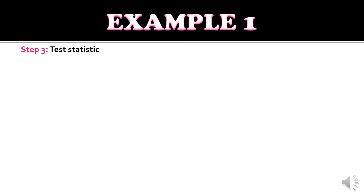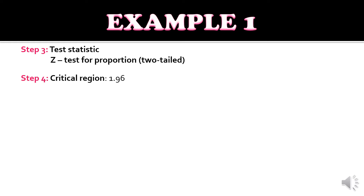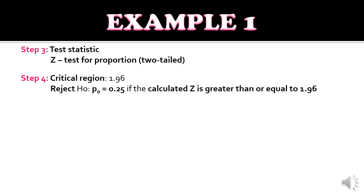For step three, the test statistic is the Z-test for proportion, and from the problem it is two-tailed. For step four, we identify the critical region. With alpha 0.05 and two-tailed, the critical value is 1.96. We would reject the null hypothesis — population proportion equals 0.25 — if the calculated Z is greater than or equal to 1.96.